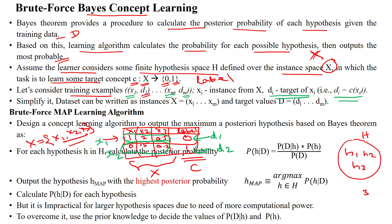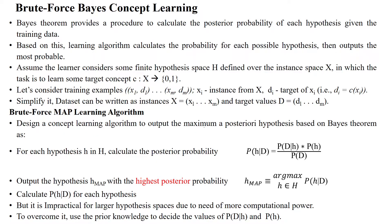C means concept learning. The dataset can be written as X1 to XM — M number of samples — all samples having corresponding labels D1 to DM. Based on this, we can calculate the maximal posterior hypothesis using the Bayesian theorem.